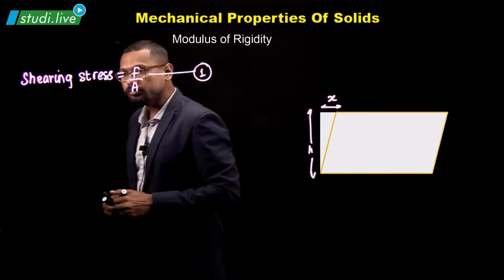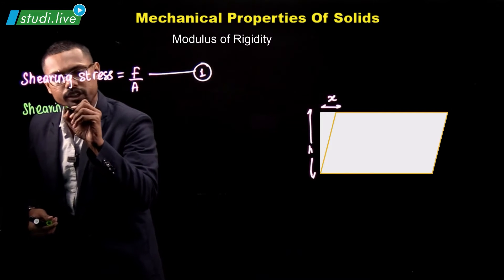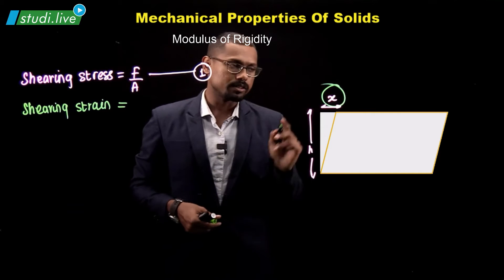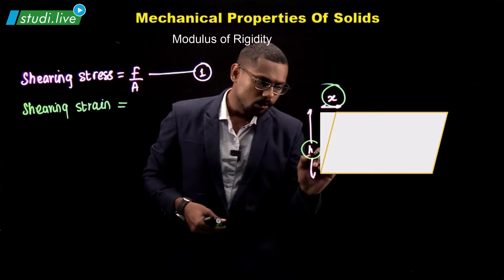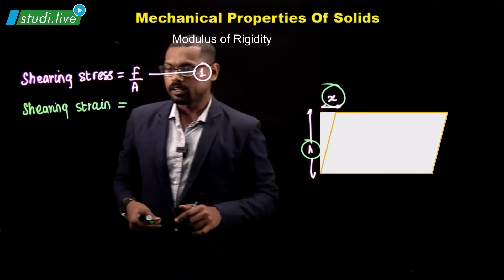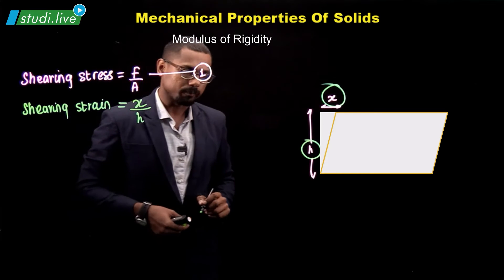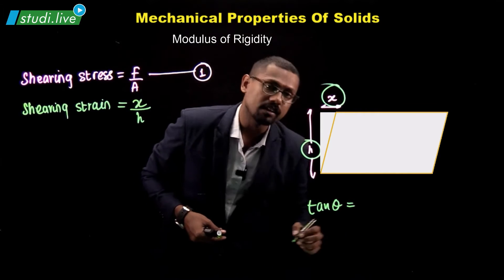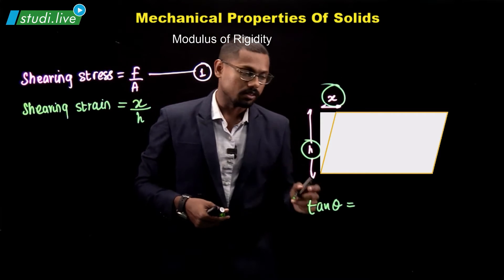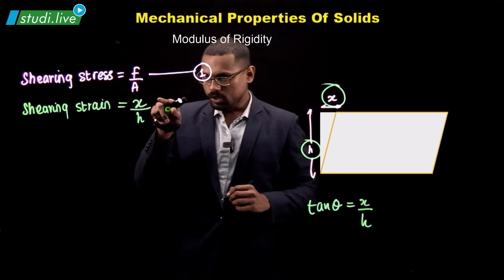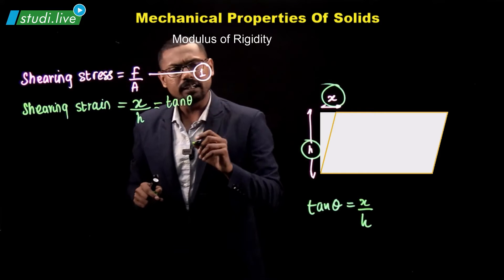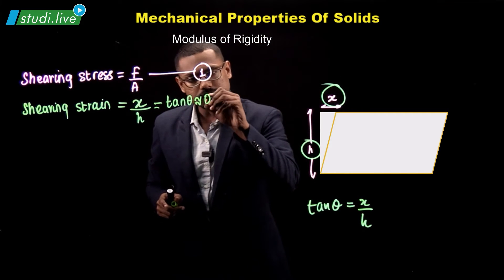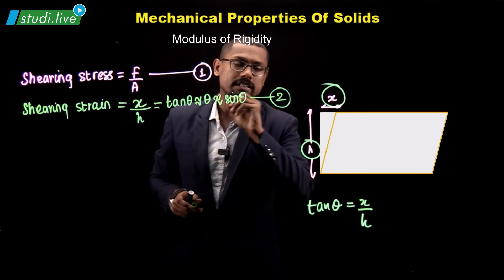The next is shearing strain. Shearing strain is change in dimension divided by the original dimension. The change in dimension is x, since that is the extension, and the original dimension is h, since that is fixed. Therefore, shearing strain equals x divided by h. If we consider an angle theta there, tan theta equals opposite over adjacent, which is also x over h. So shearing strain can be expressed as tan theta, and if theta is small, tan theta equals theta, which also equals sin theta.